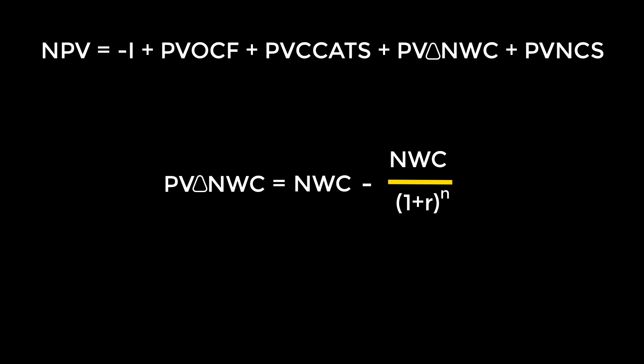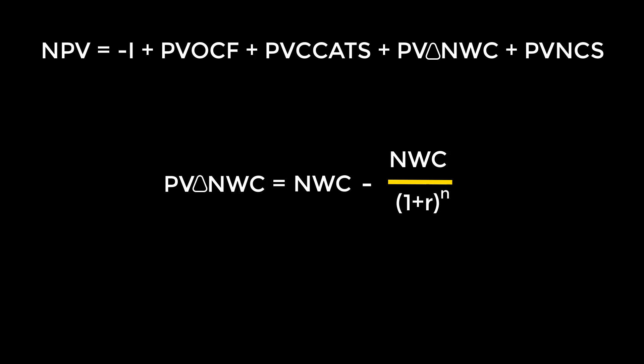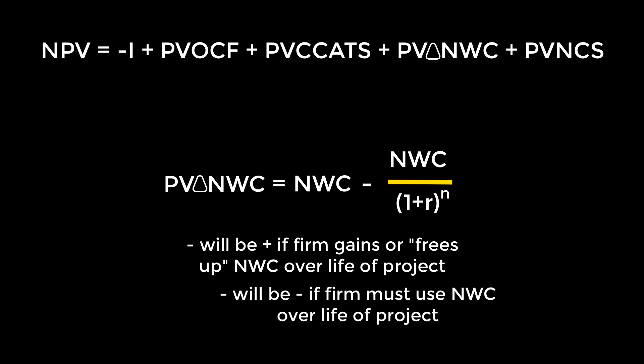Next, let's talk about PV∆NWC. Figuring out net working capital, NWC, in problems can be tricky because it often involves reading and understanding what's happening to the money. The important thing to remember is that if accepting the project means the company gains net working capital for the duration of the project, our NWC value will be positive. On the other hand, if the company has to use net working capital for the duration of the project, our NWC value will be negative. If there are no changes to the NWC, or the problem doesn't mention NWC at all, we completely skip this part and assume the value is 0. If this isn't clear, don't worry, we'll explore it in a problem later.